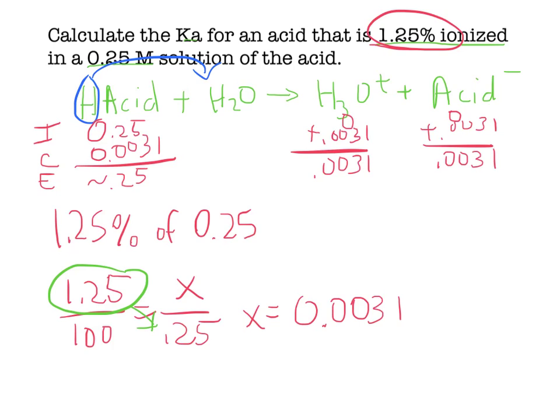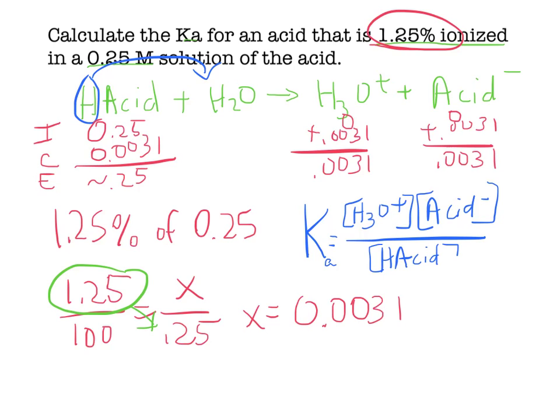I can easily find the pH for this, but it's actually asking me for the Ka. So, Ka expression: Ka equals H3O+ times acid minus over H-acid. And all I've got to do is plug it in.